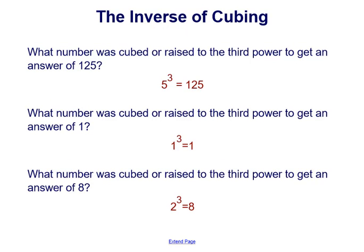So because 5 cubed is equal to 125, the answer of what number was cubed or raised to the third power to get an answer of 125 is 5.